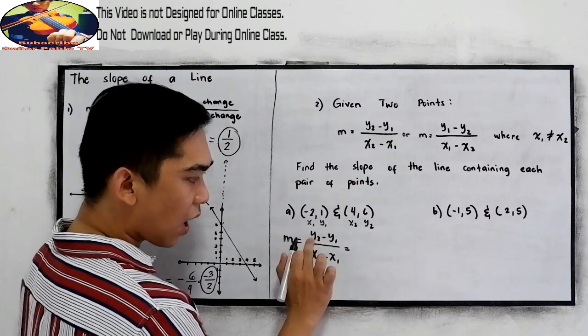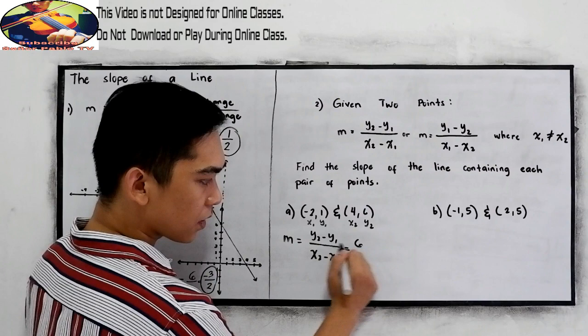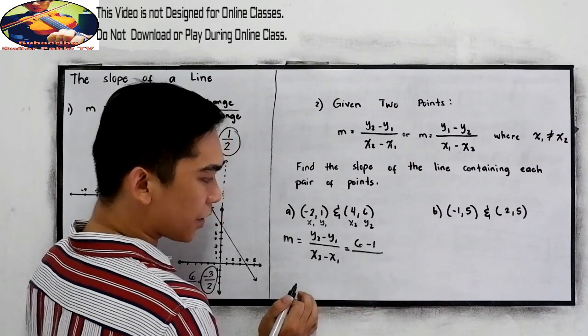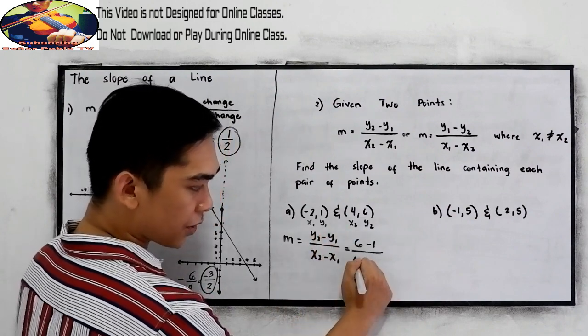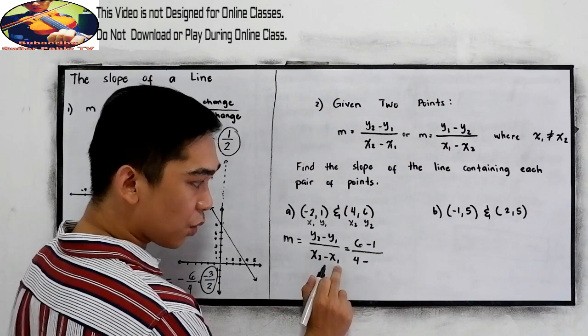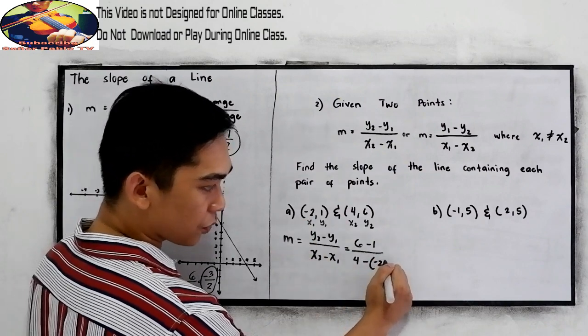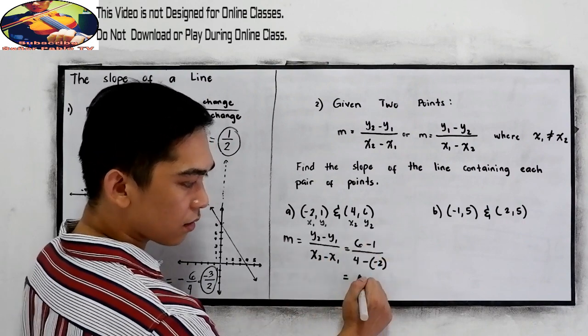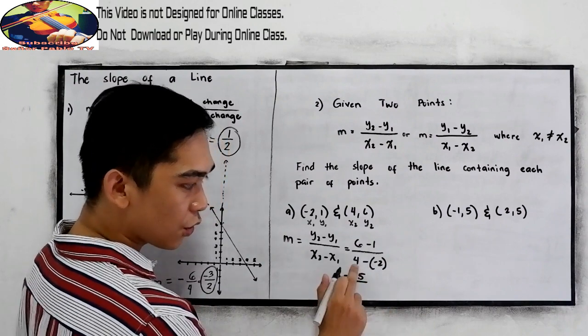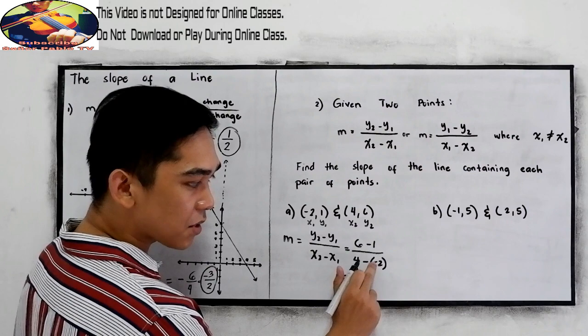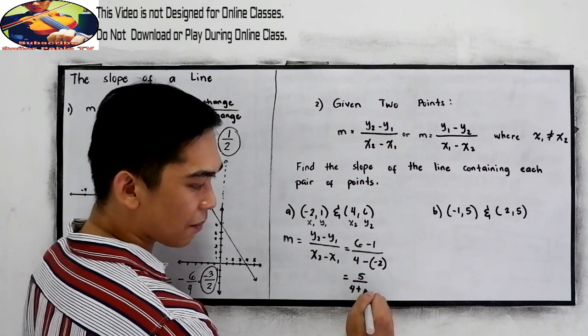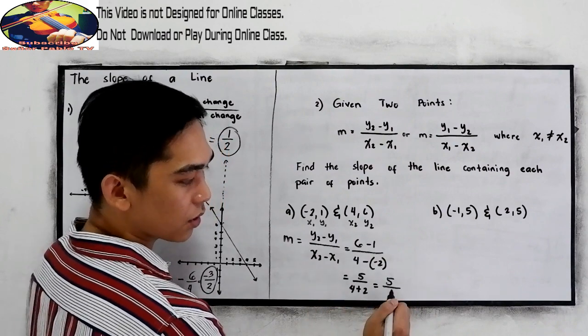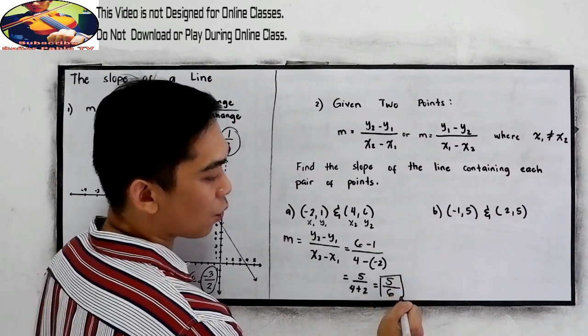Now, substitute. Our y sub 2 is 6 minus y sub 1 is 1. All over x sub 2, x sub 2 is 4 minus x sub 1, x sub 1 is negative 2. Don't forget the sign. 6 minus 1, that is 5 over 4 negative times negative, that is positive and copy 2. So we now have 5 over 4 plus 2, that is 6. This will be our slope.